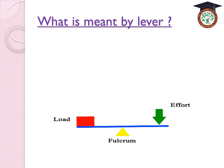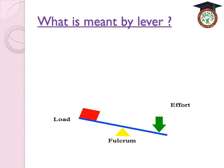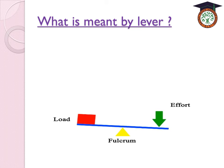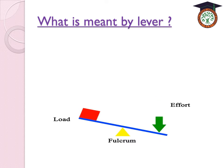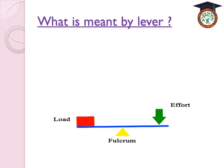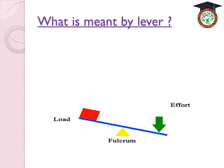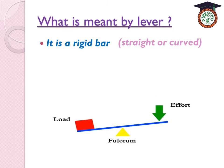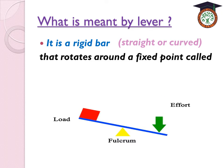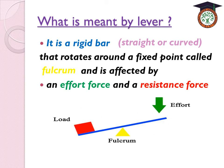From this picture we can conclude the definition of a lever. Any lever is composed of a bar — the blue one — that rotates around a fixed point, the yellow one, called the fulcrum. It is affected by two forces: the green one, the effort force, and the red one, the resistance force that results from the load. The lever is a rigid bar, straight or curved, that rotates around a fixed point called the fulcrum, and is affected by an effort force and a resistance force.